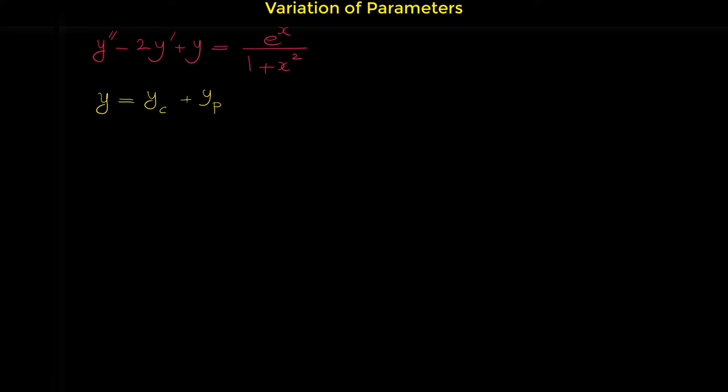For finding the complementary solution, we first have to write the homogeneous equation corresponding to this equation: y double prime minus 2y prime plus y equals 0. The homogeneous equation has 0 on the right side. For finding its solution, we write the characteristic equation: R squared minus 2R plus 1 equals 0.